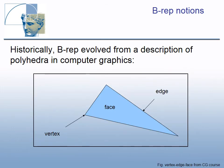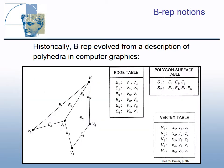Historically, BREP evolved from a description of polyhedra in computer graphics. This description is based on the elements of polygons such as vertex, edge, and face shown on the triangle. In the shown example of a polyhedral surface description, topological information is given by two tables: one for polygon surfaces or faces, and another for edges.